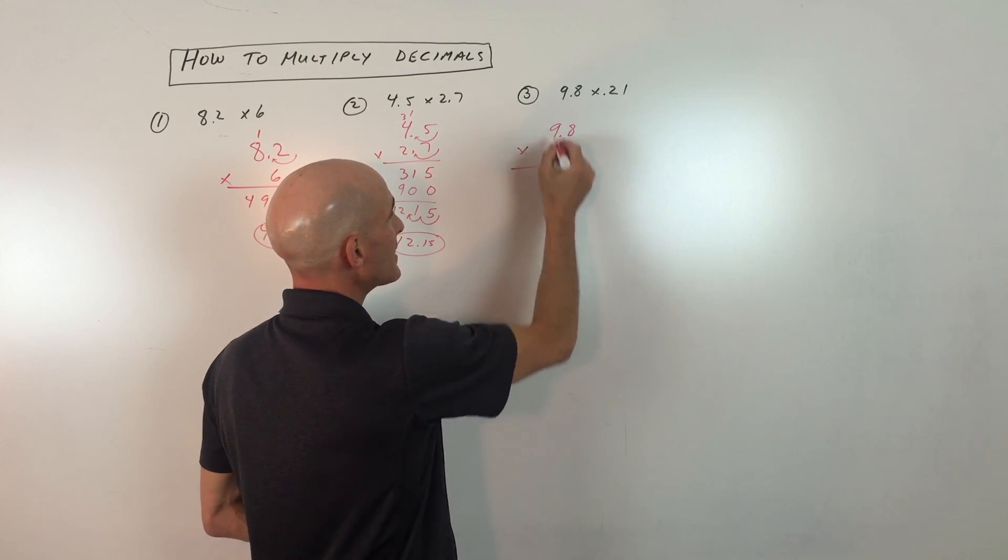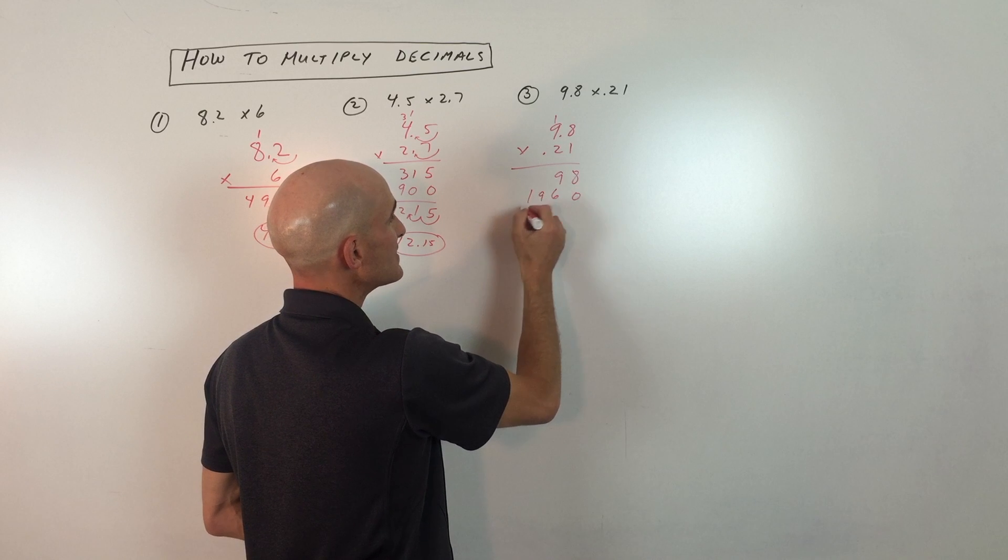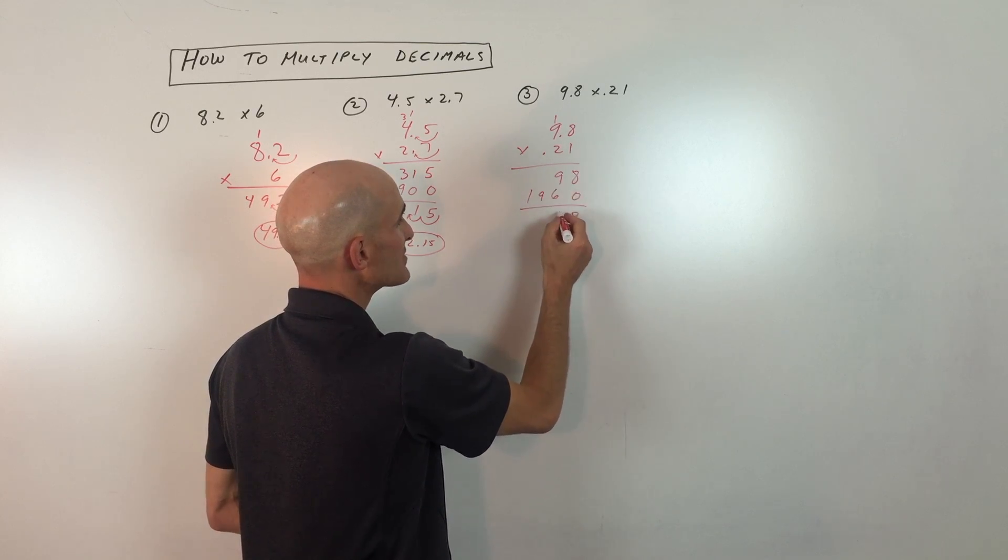2 times 8 is 16. I'm carrying the 1. 2 times 9 is 18 plus 1 is 19. I'm adding straight down. 9 plus 6 is 15. Carry the 1. That's 10. Carry the 1. 2,058.